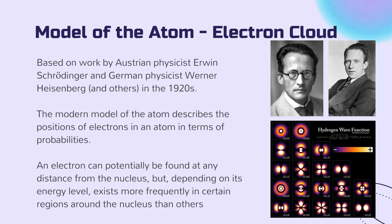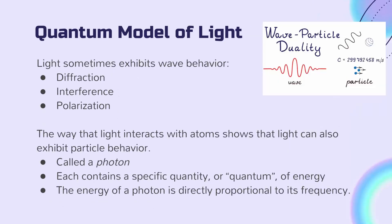We will be dealing with the Bohr model. In order for us to continue in our study of atomic physics, we have to understand the quantum model of light. As we've already learned, light sometimes exhibits wave behavior. When light diffracts, or interferes, or is polarized, it is behaving like a wave. But the way that light interacts with atoms shows that light can also exhibit particle behavior. Light as a particle is called a photon, and each photon contains a specific quantity or quantum of energy.